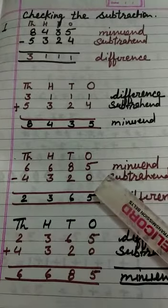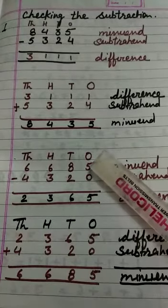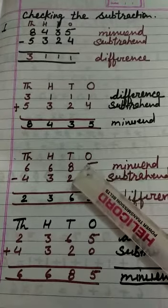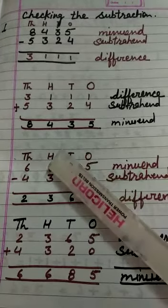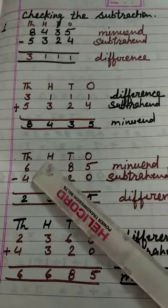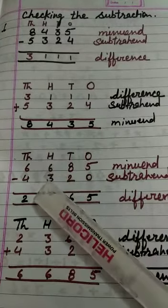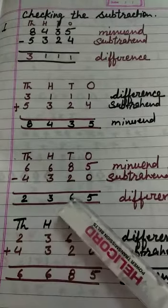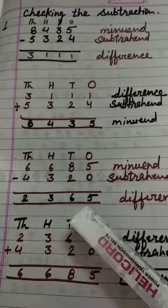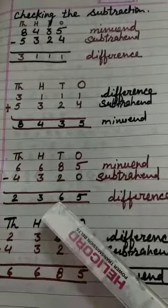Let's start to solve it. 5 minus 0 is 5. 8 minus 2 is 6. 6 minus 3, then 3. 6 minus 4 is 2. So the answer of the subtraction is 2,365. This is the difference.